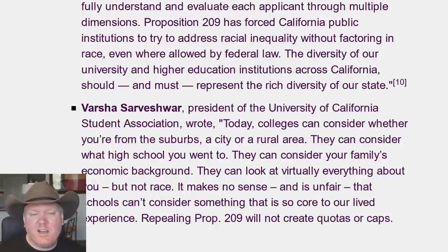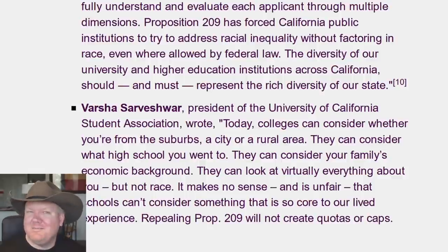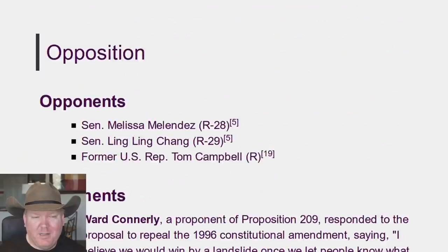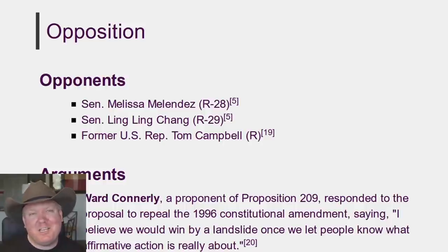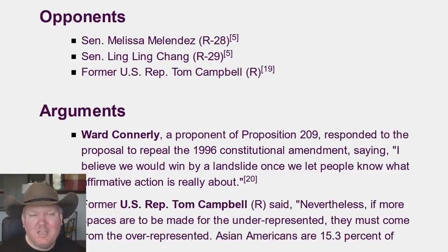Napolitano continues: 'Proposition 209 has forced California public institutions to try and address racial inequality without factoring in race, even where allowed by federal law. The diversity of our university and higher education should and must represent the diversity of the state.' Then we have some people who are opposing the measure — not as long a list as those in favor. As you can see, they're Republicans. The Republicans would very much like to not discriminate on the basis of race. Opposing this are State Senators Melissa Melendez, Lee Lee Chang, and former Representative Tom Campbell.